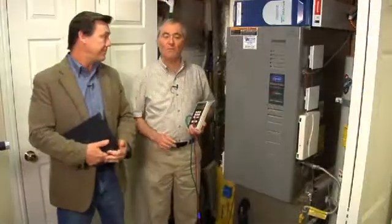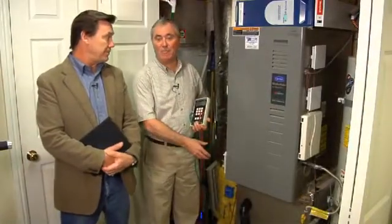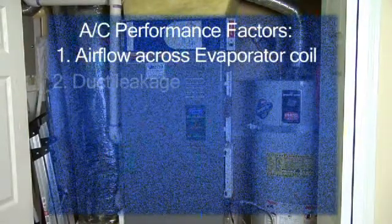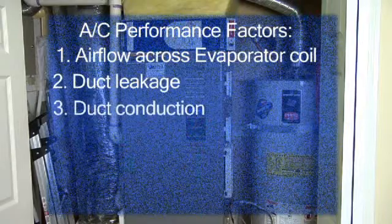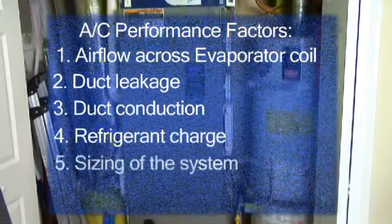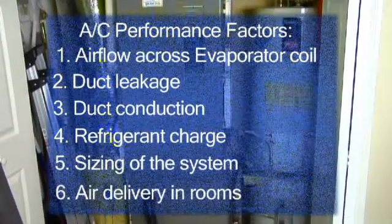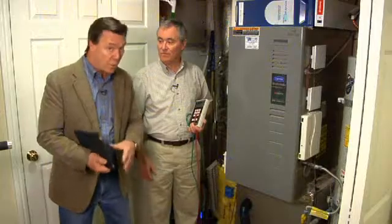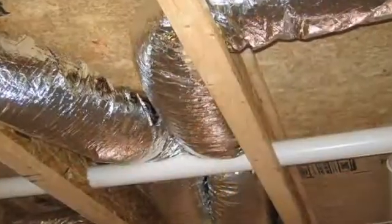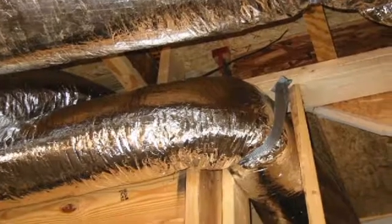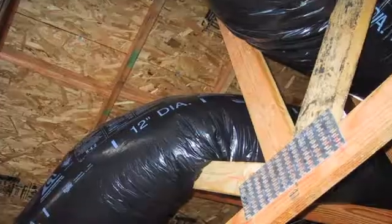Air flow across the air conditioner's evaporator coil is just one of our six air conditioner performance factors. We also need to pay attention to duct leakage, duct conduction, the refrigerant charge in the system, the sizing of the system, and how the air delivers air into each room. If we have a distribution system or ductwork that has lots of compressions or hard bends — lots of restrictions — that increases what we call the static pressure in the system.